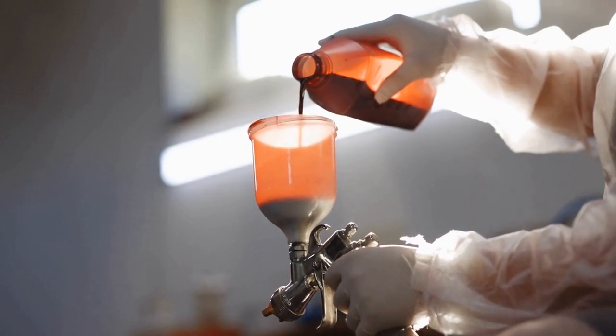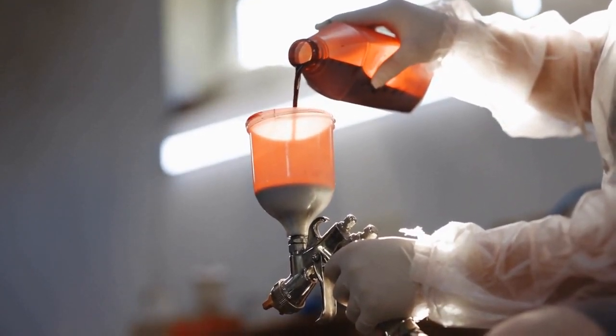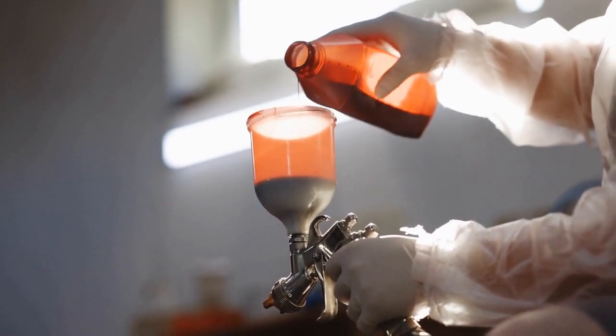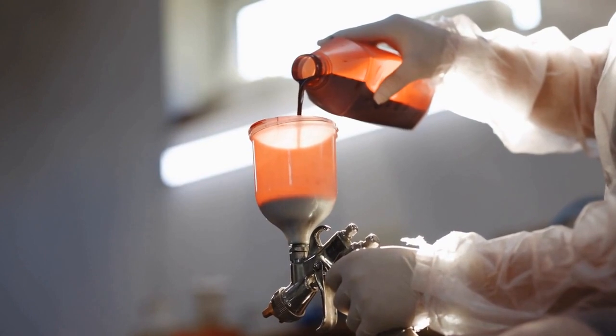Spray Guns and Atomizers: Robotic painting systems use a variety of spray guns and atomizers to apply the paint, including air-assisted, airless, and electrostatic guns.